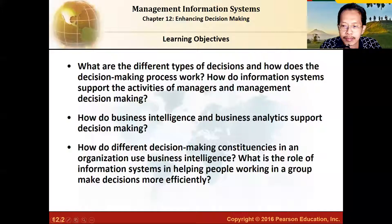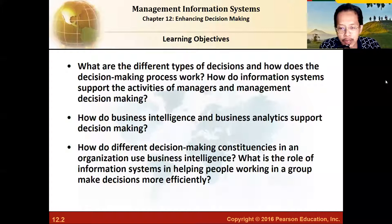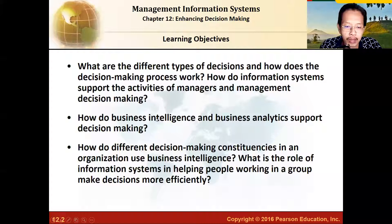In the first part, we'll talk about the different kinds of decisions made in an organization, especially in a company setting, and about the process of making those decisions, and how information systems support those decisions that managers are making. The second part will be on business intelligence and business analytics — how they support decision-making and what are the context and constituents of business intelligence.